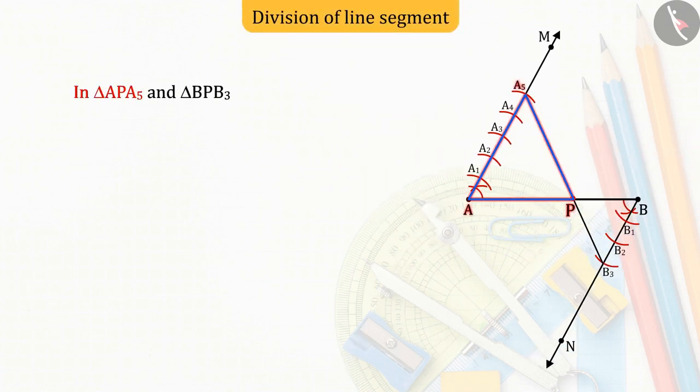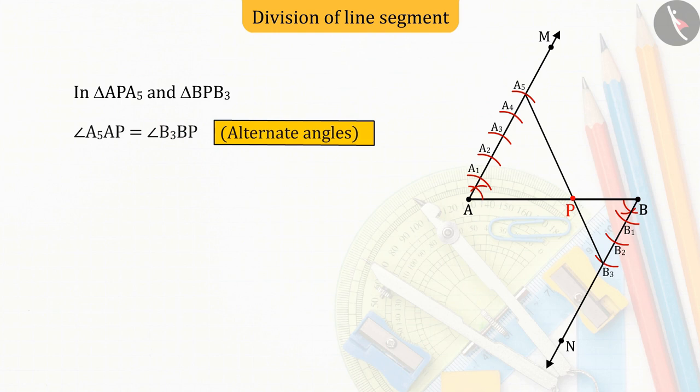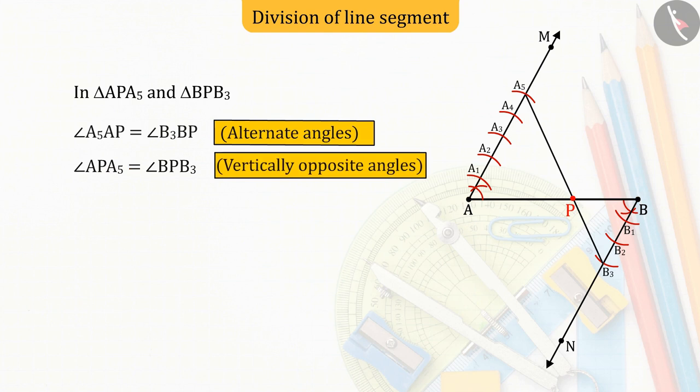In triangles APA5 and BPB3, angles A5AP and angles B3BP are equal, and angles APA5 and BPB3 are equal.